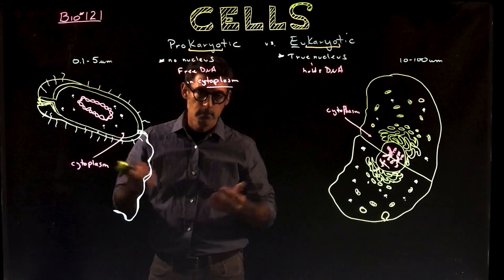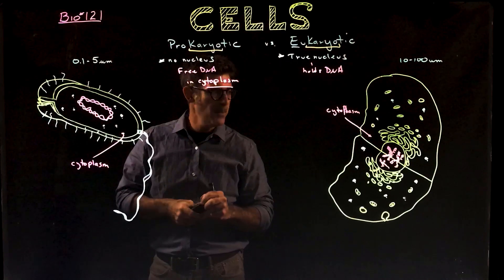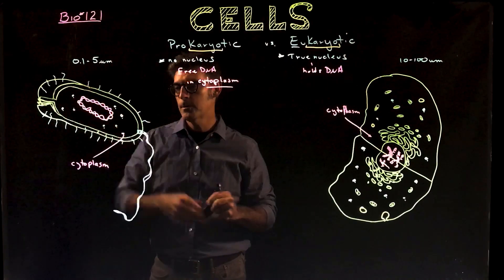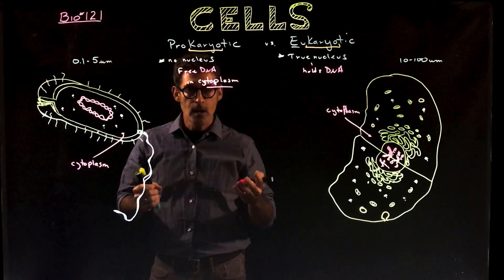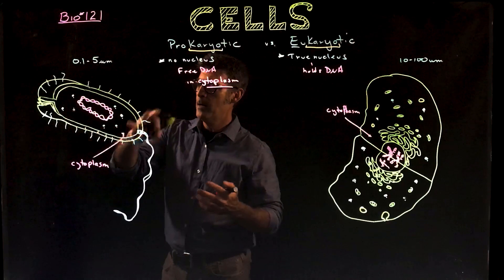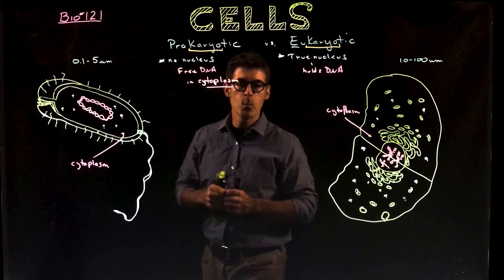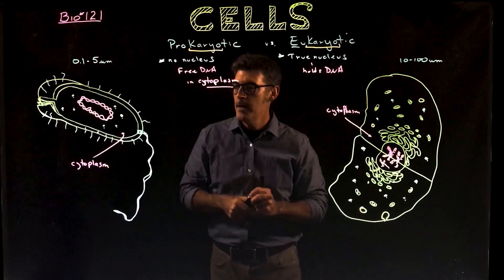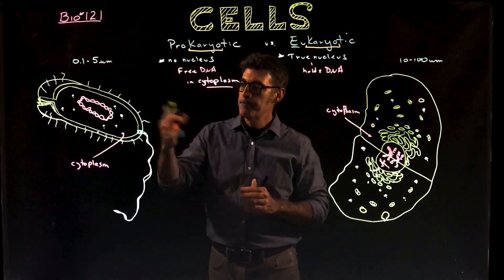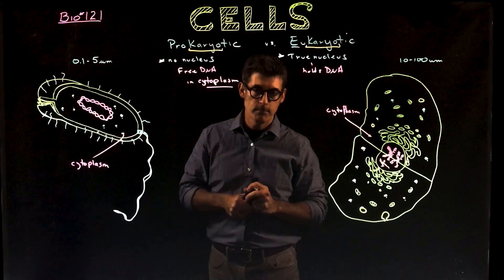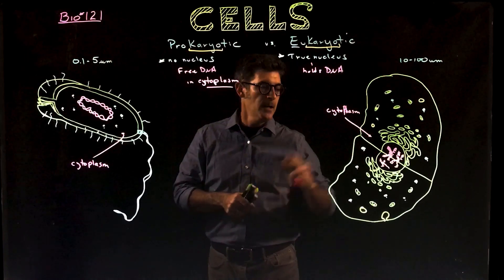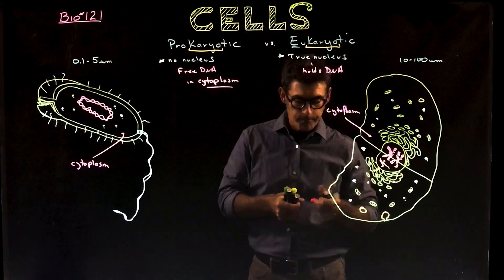Some of the bad things: the DNA is exposed to any toxins, any chemicals that are produced as waste products from the metabolism of the bacteria. The DNA is exposed to those, as opposed to the eukaryotic cell.